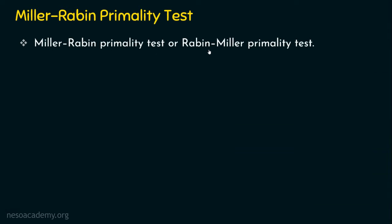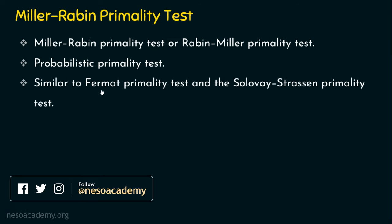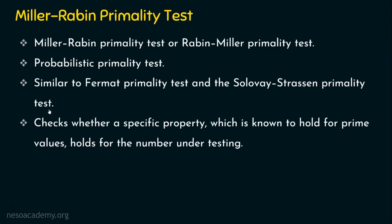The Miller-Robin primality test is also called the Robin-Miller primality test. This test performs a probabilistic primality test. The result will be whether the given number is a composite number or probably a prime number. This test is similar to Fermat's primality test and the Solovey-Strasen primality test, in that it checks whether a specific property known to hold for prime values holds for the number under testing.